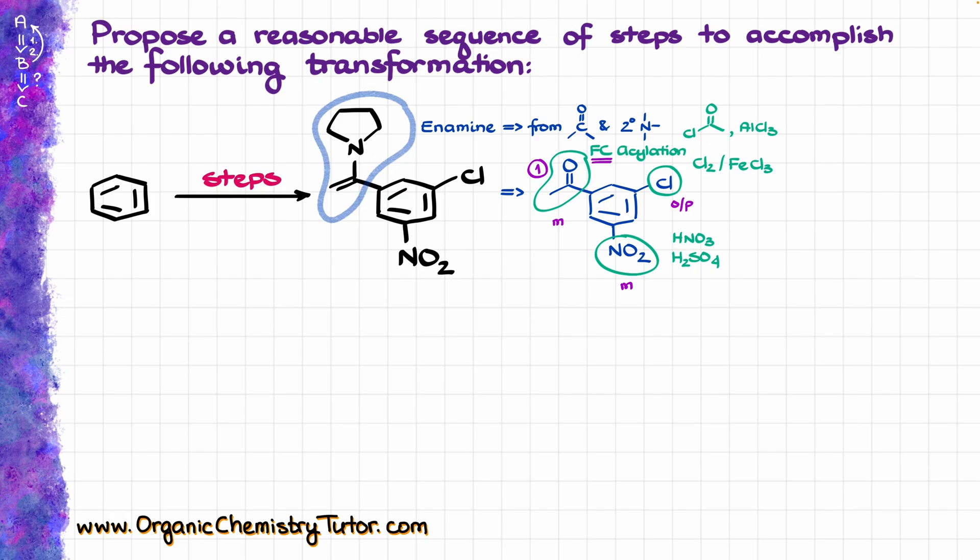Now, since the acyl group is going to be a meta director, I can either add chlorine or the nitro group next. However, since the chlorine is an ortho para director and the nitro group is a meta director, my second step must be the nitration, because once I have two of those groups on my aromatic ring, all of those corresponding ortho and para positions are going to be deactivated, and the only place where the final chlorination can occur is going to be where I want it to be. So, my chlorination is going to be step number three.